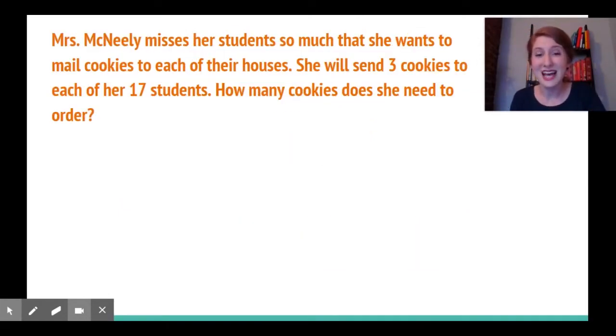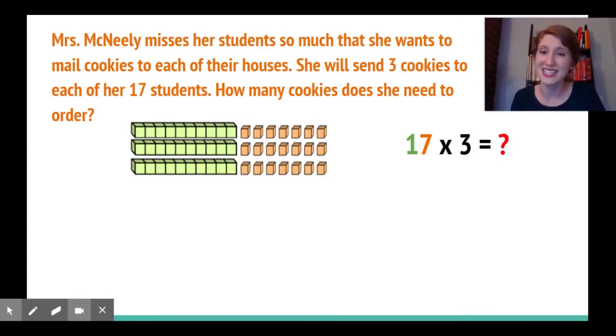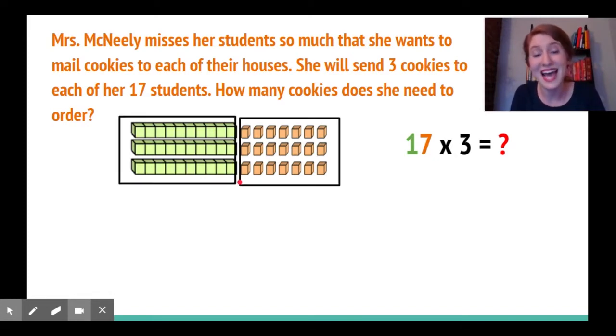I've got 17 students. 17 is made of 10 and 7, so if I want to do 17 three times, then I could break up my 17 and multiply my 7s times 3 and my 10s times 3, and then add those two parts or partial products together to get the whole answer.